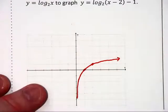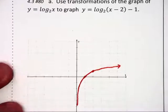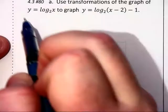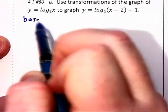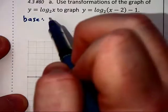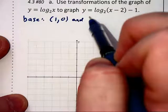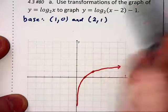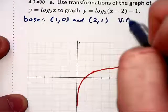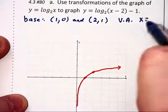Now, let's take a look at this another way. The other way to look at this is to say our base graph, before we do any shifting, is going to go through 1, 0. It's also going to go through 2, 1. And it's going to have a vertical asymptote at x equals 0.